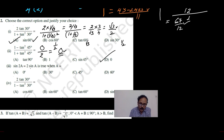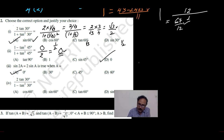Here sin2A is equal to 2sinA is true only when A is equal to 0. Suppose when you put 0, LHS is also 0 and sin0 is 0, 2 into 0 is 0. Therefore this is the option for us. But for all others we cannot get the same. Suppose if we substitute 30, LHS is sin60 and that is root 3 by 2.